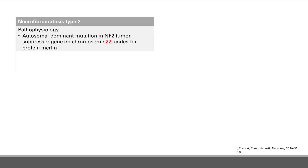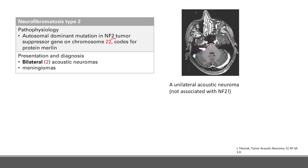Now we have NF2, neurofibromatosis type 2. This is an autosomal dominant mutation to the NF2 tumor suppressor gene on chromosome 22. So NF2 on chromosome 22. This codes for the protein Merlin. The presentation is very characteristic: you get a bilateral acoustic neuroma, which is another name for a vestibular schwannoma — a benign tumor that can affect cranial nerve 8.